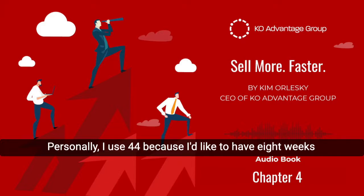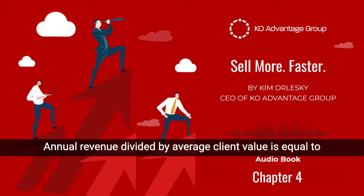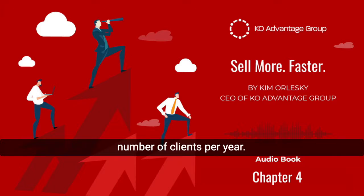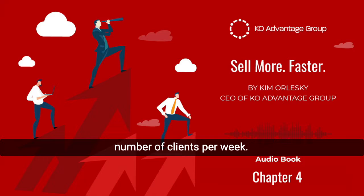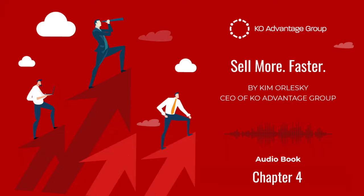Personally, I use 44 because I like to have 8 weeks of vacation a year. Annual revenue divided by average client value equals number of clients per year. Number of clients divided by 50 work weeks per year equals number of clients per week.